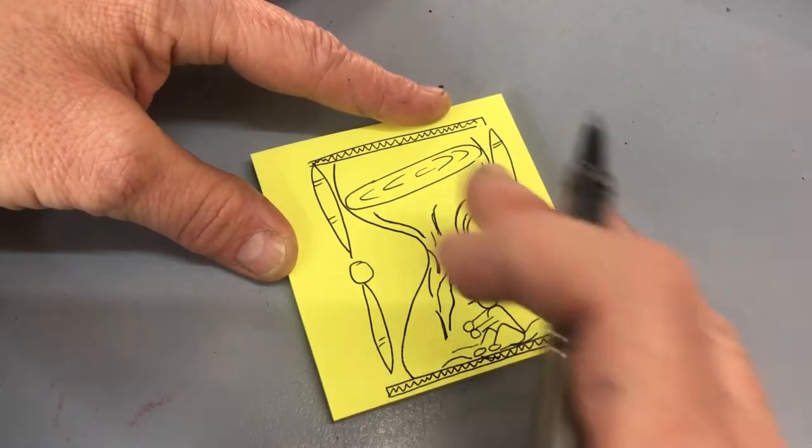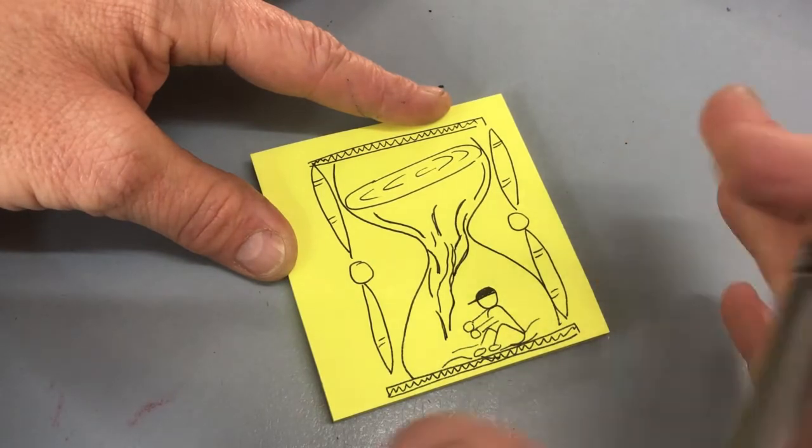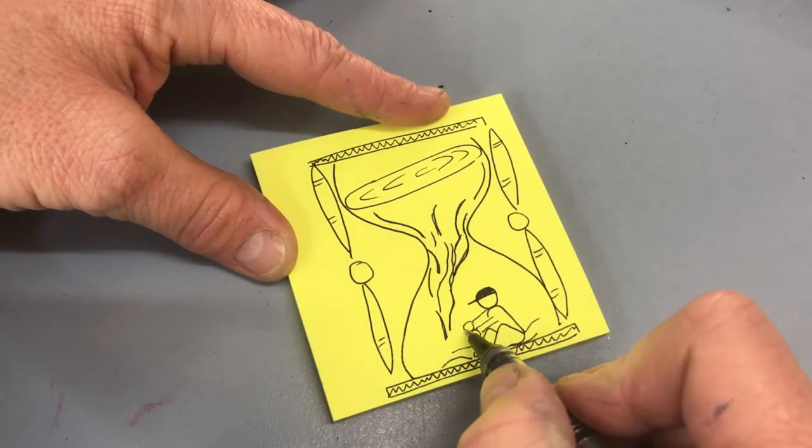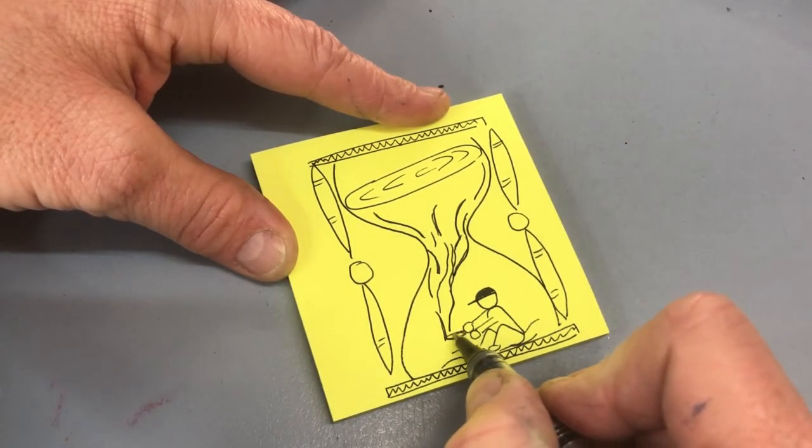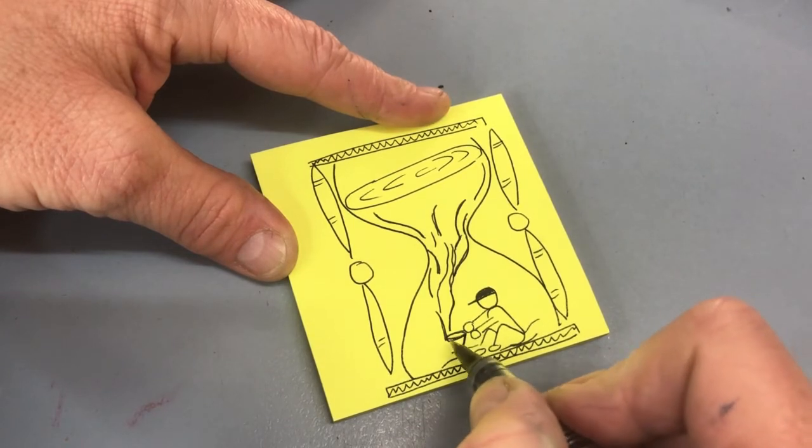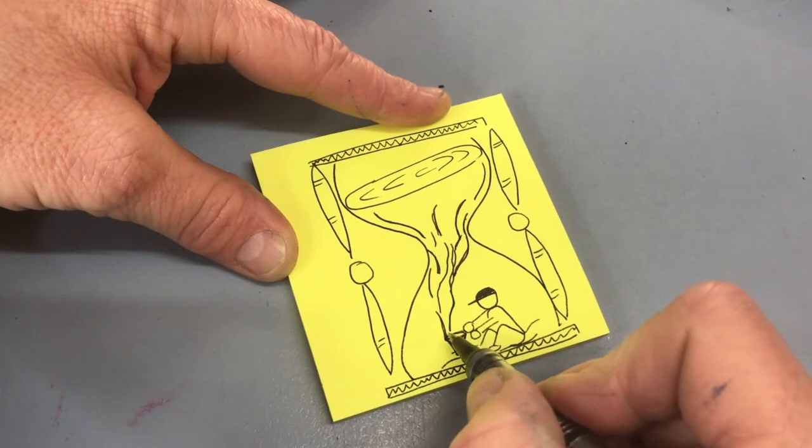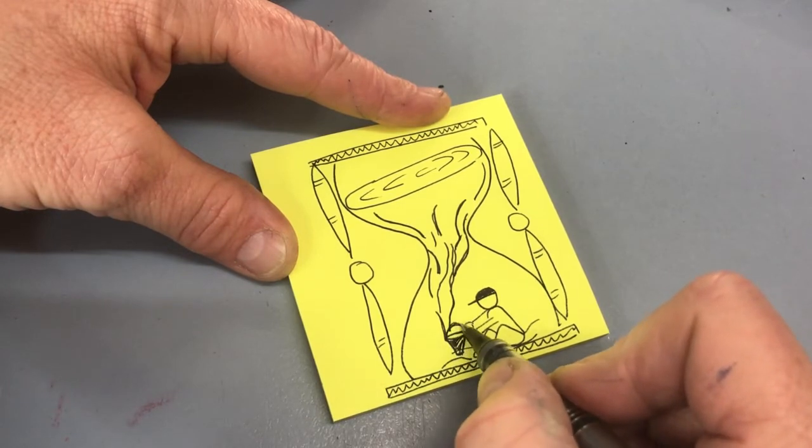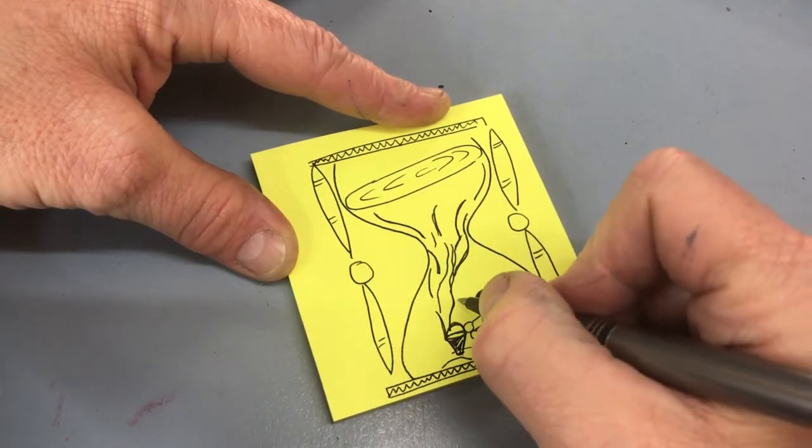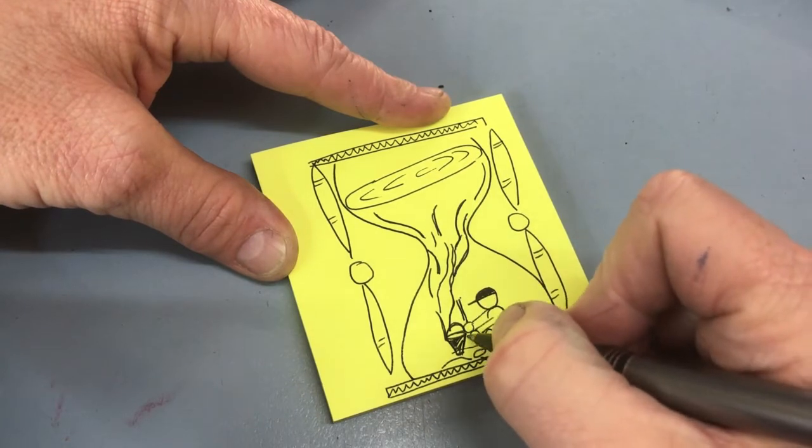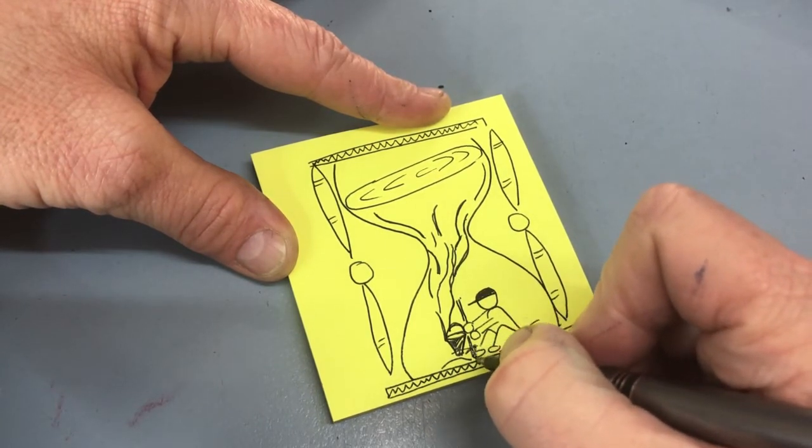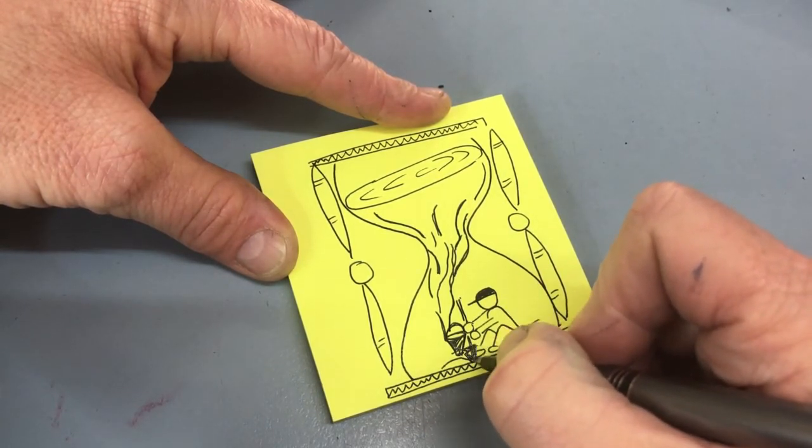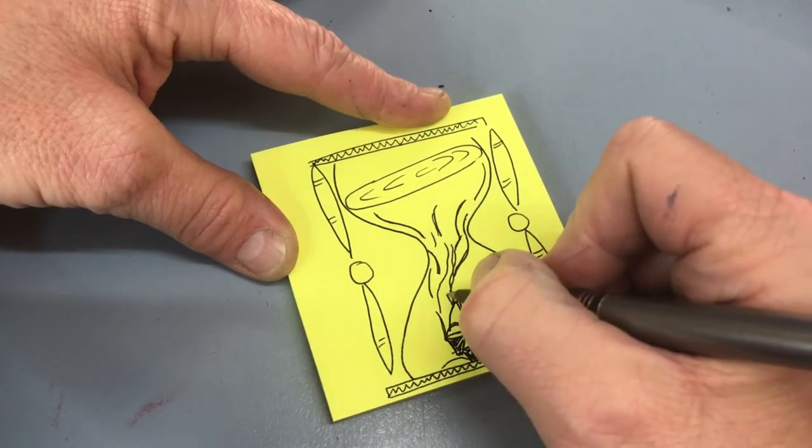But look what we can do. We can adapt our picture and we can change it. If I give this little guy here a bucket, put a little pail on it and let's give him a spade as well. Let's give him a bucket and a spade inside his little world.